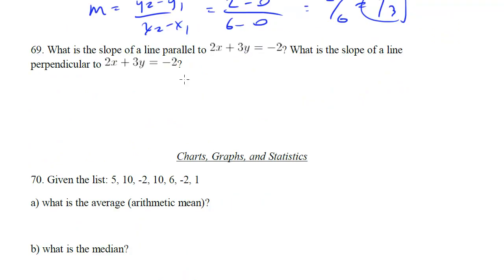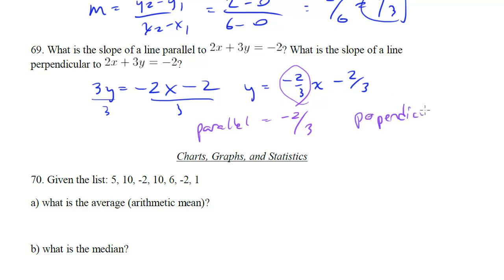What is the slope of the line parallel to 2x + 3y = -2y? Well, let's rearrange this to get it into mx + b form so that we can get the slope. We can get 3y equals, move the 2x over, minus 2x minus 2. Divide everything by 3, we get y equals -2/3x minus 2/3. Now we don't care about the y-intercept, we just care about the slope. We see here that the slope is -2/3, so a line parallel would have a slope equal to the slope of this line, so -2/3. Perpendicular, on the other hand, would be the negative reciprocal, so we negate it, make it positive, and flip, so this becomes 3/2. That would be the slope of a line perpendicular.